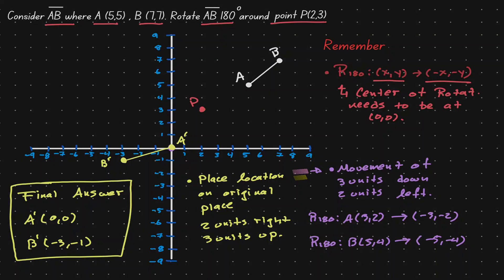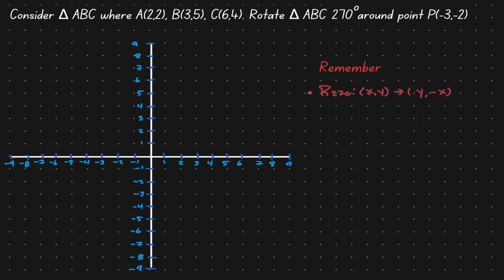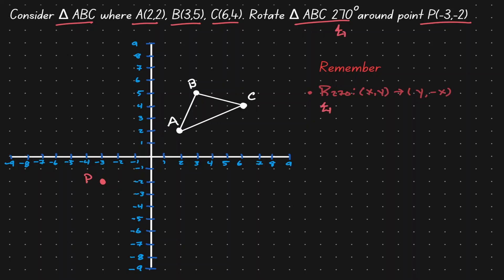Let's take a look at another example. In this problem we have a triangle with given vertex locations. What we want to do is rotate the object 270 degrees with the center of rotation at a specific point. Let's place this information in our plane and connect those points. For a 270-degree rotation, we have a rule: for any coordinate point, the image is at the swapped coordinates with a sign change.